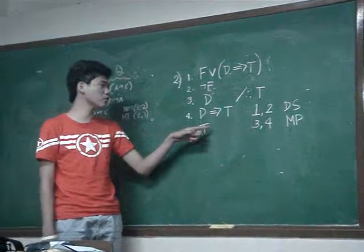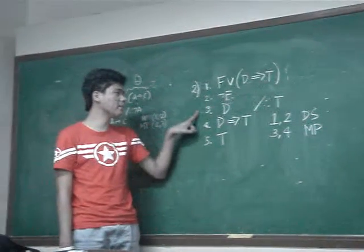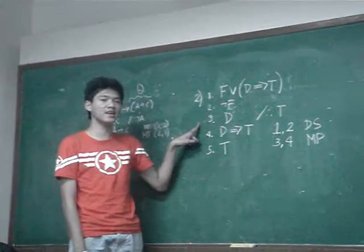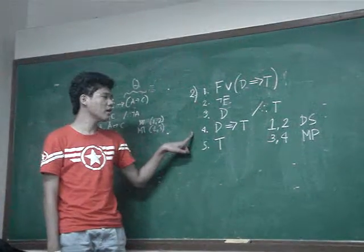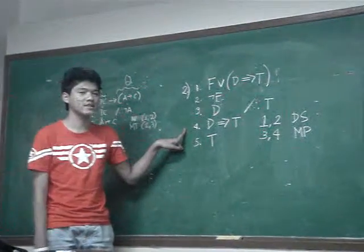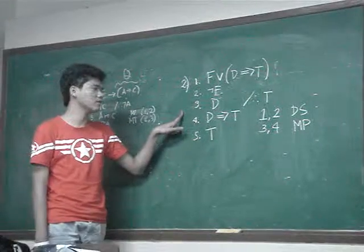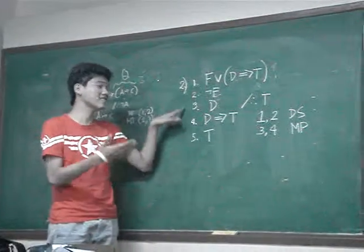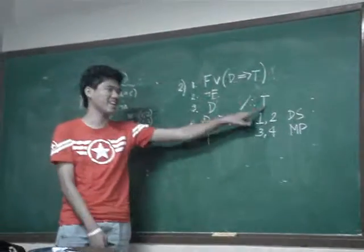Then, we're going to look at 3 and 4. We can then say that 3 and 4 has modus ponens which has the result of D implies T.